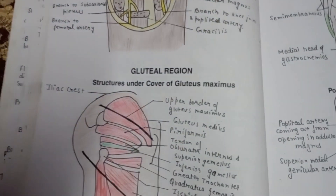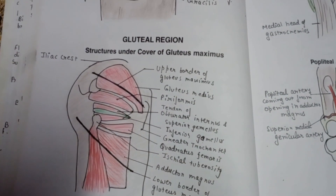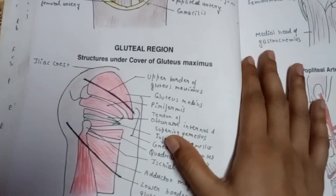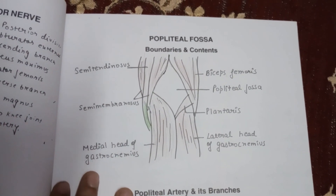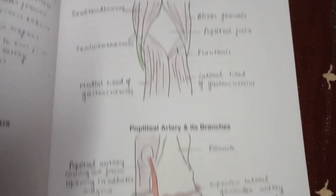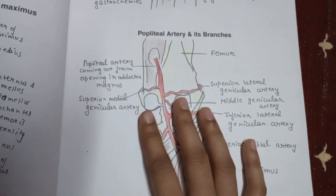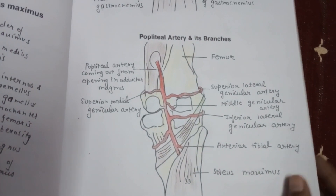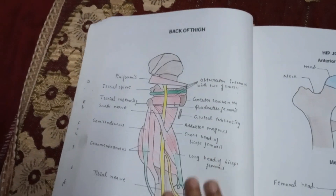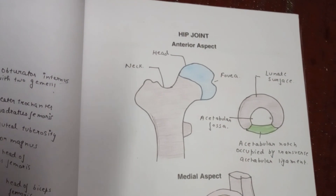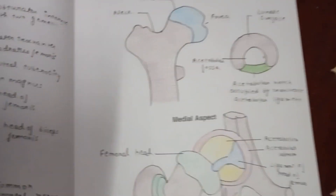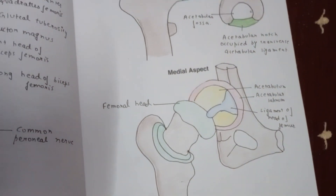This is the gluteal region. After gluteal region, here comes the popliteal fossa — the back of your patella, popliteal artery and its branches. This is the diagram of the back of your thigh. Now, your hip joint — this is the anterior aspect and this is the medial aspect of your hip joint.